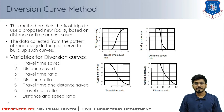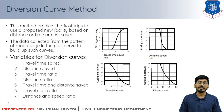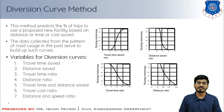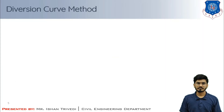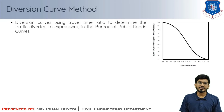Diversion curves can be constructed using various variables such as travel time saved, distance saved, travel time ratio, distance ratio, travel time and distance saved, travel cost ratio, and distance and speed ratio. As an example, the Bureau of Public Roads (BPR) curve uses the time ratio as the single variable to determine the traffic diverted to an expressway.